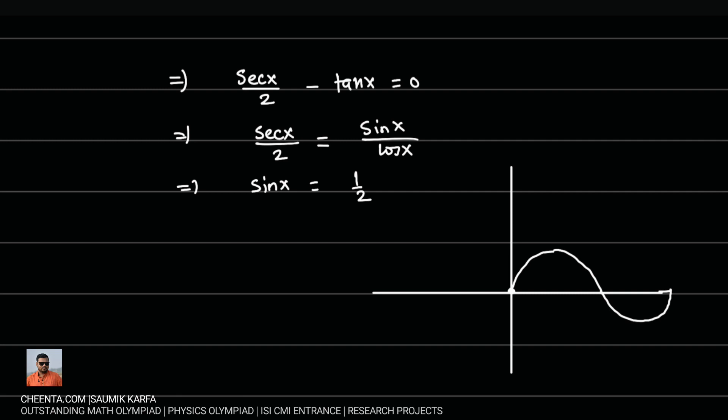If you look at the graph between 0 to π, so this is the point 0 and this is the point π, the graph is symmetric about the line x equal to π by 2. Somewhere there we have the output half, which is basically at x equal to π by 6.